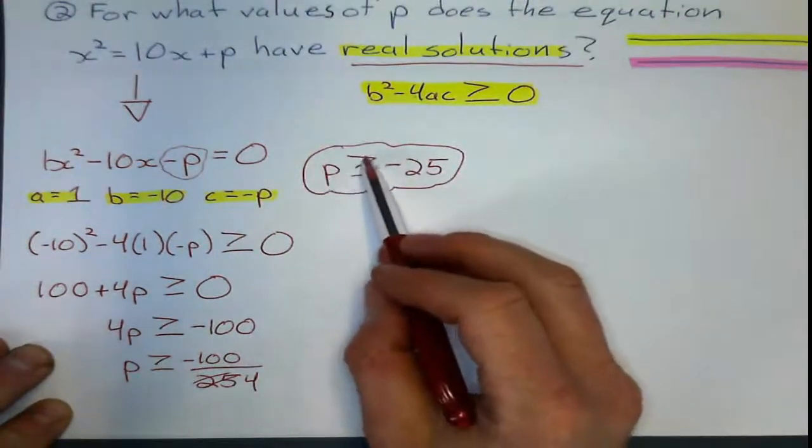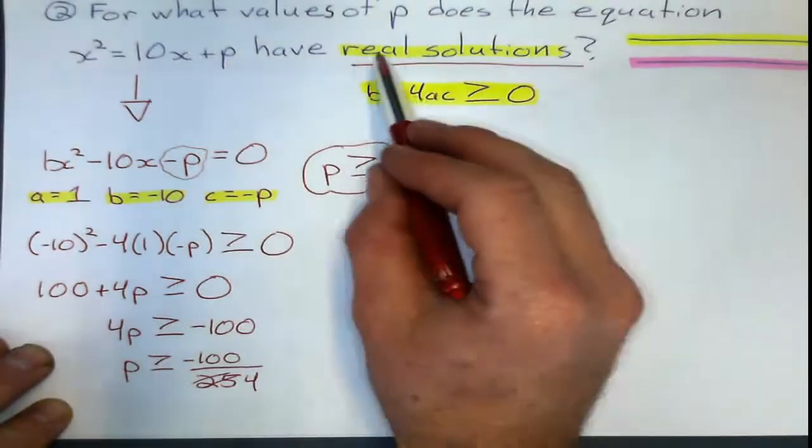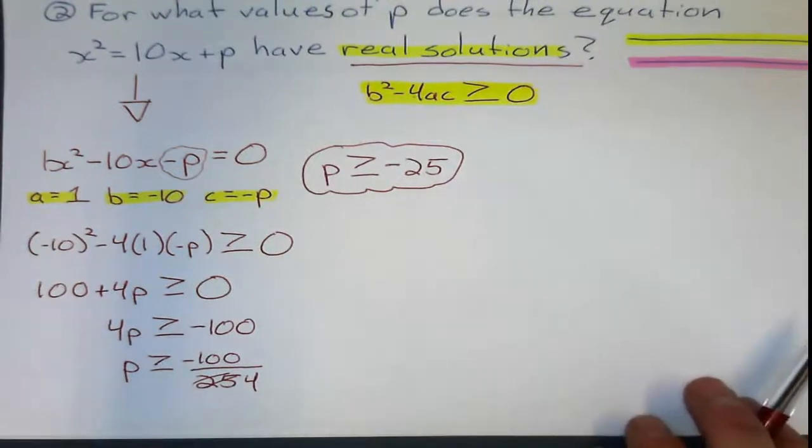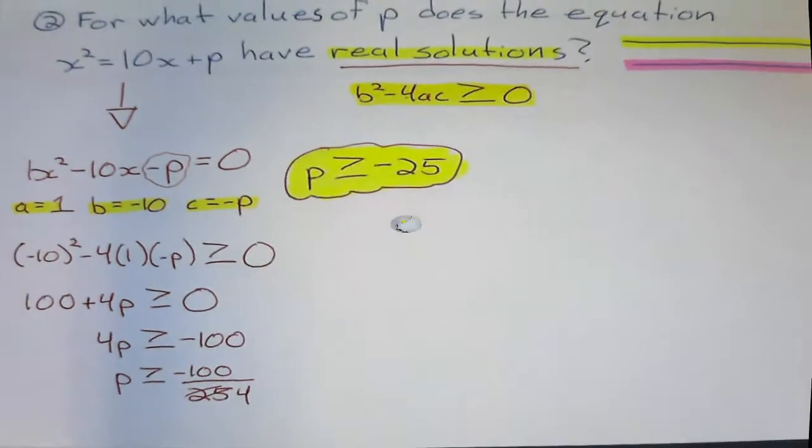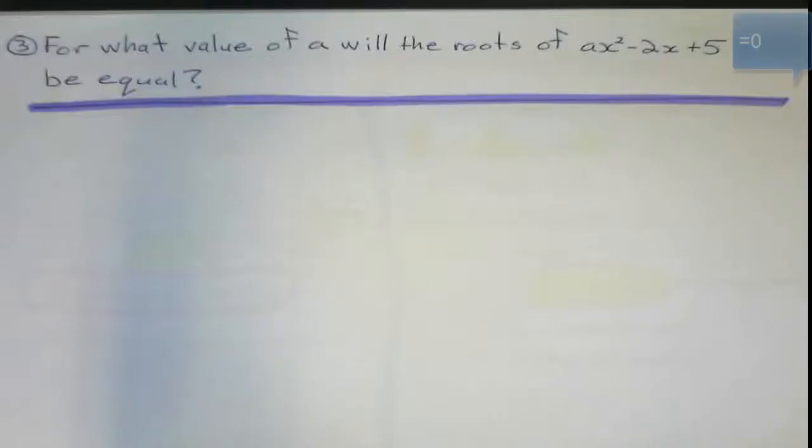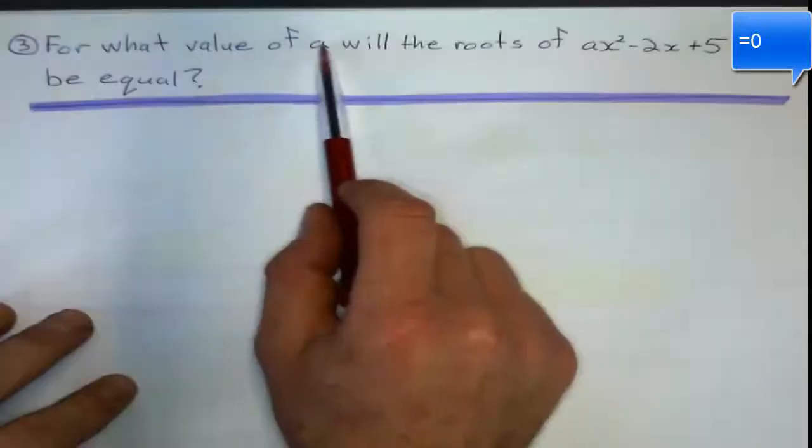So what does that mean? It means any value greater than or equal to negative 25 will make this equation have real solutions. Make it have 2 or 1 x-intercept that have real solutions. Last example.